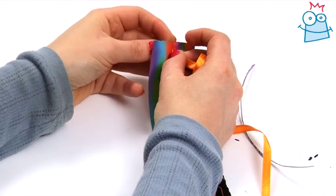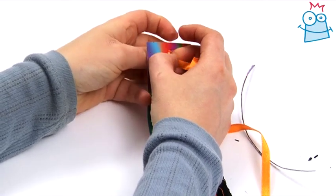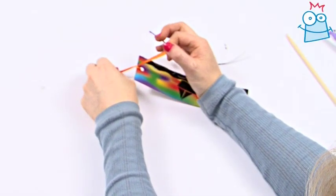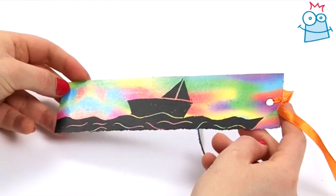Pick up your ribbon and loop it through the hole in the top, tying it in a knot like so. And your sunset bookmark is done.